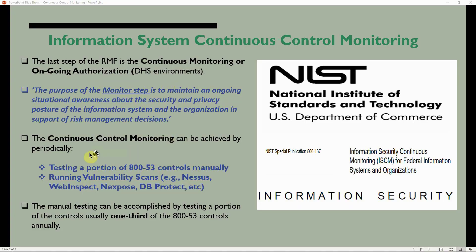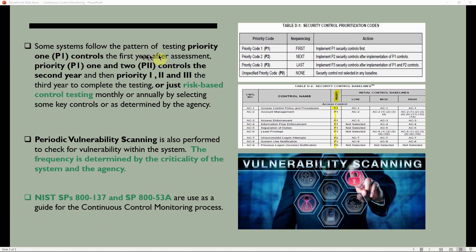Continuous control monitoring can be achieved by periodically testing a portion of the SP 853 controls manually and also periodically running vulnerability scans such as Nessus, WebInspect, Nexpose, and DBProtect. Manual testing can be accomplished by testing a portion of the controls — usually one third of the 853 controls — annually. Systems follow a pattern of testing Priority 1 (P1) controls the first year after assessment, P1 and P2 controls the second year, and P1, P2, and P3 the third year. Alternatively, risk-based control testing is used by selecting key controls as determined by the agency.